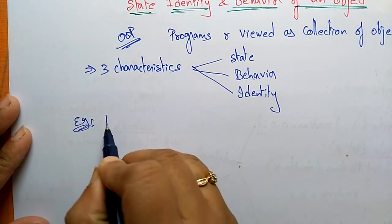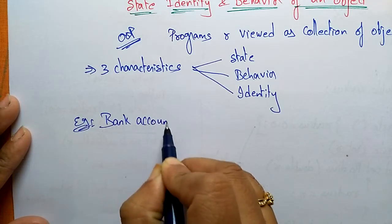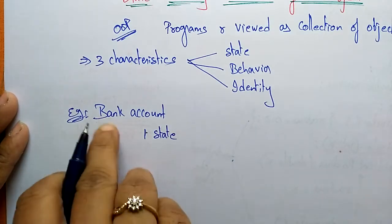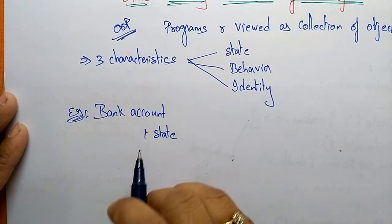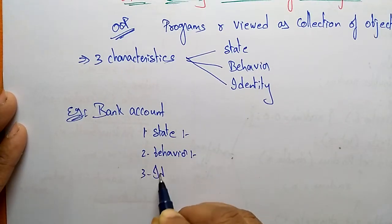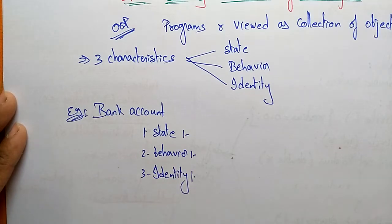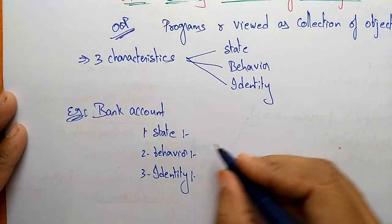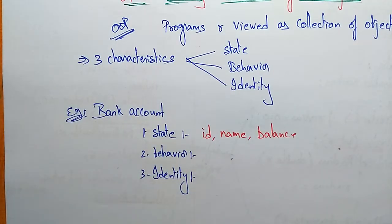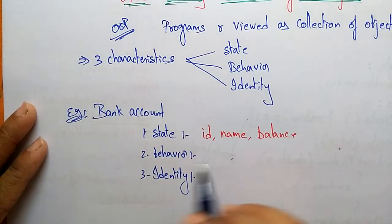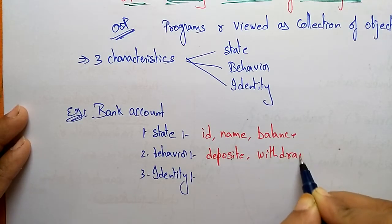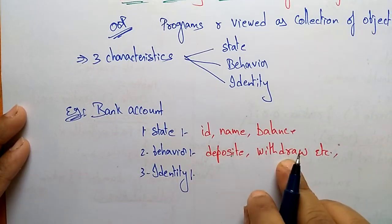Let's take one example. Suppose you take a bank account — bank is the class name, and bank account is an object. For that particular object, you have state, behavior, and identity. The states are: ID, name, and balance. The behaviors are: deposit and withdraw.